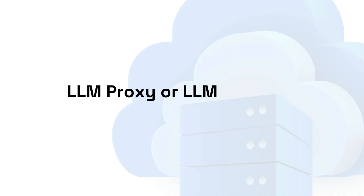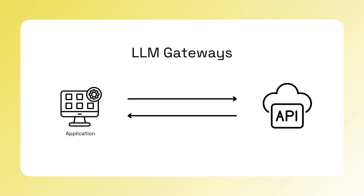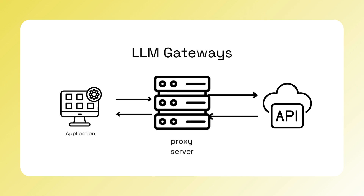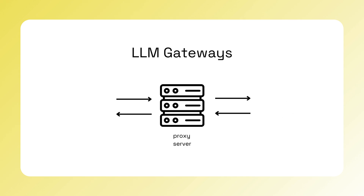LLM proxies, or LLM gateways. LLM gateways are essentially network components that reroute AI traffic. While the application thinks it's talking directly to OpenAI, the gateway actually stands between the application and the external API. This setup allows the enterprise to apply its own logic to the AI. Let's explore some of the design patterns you can implement with LLM and AI gateways.